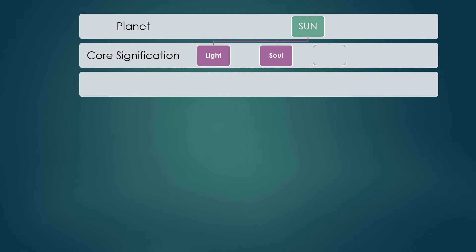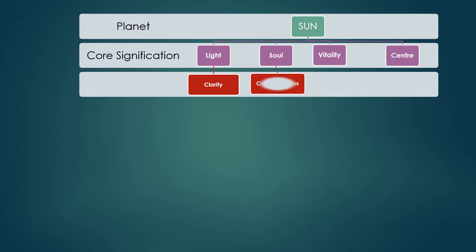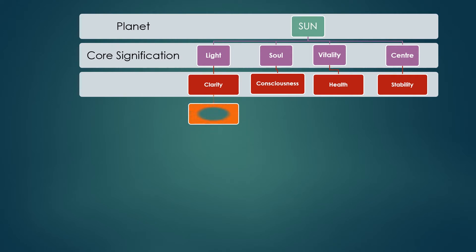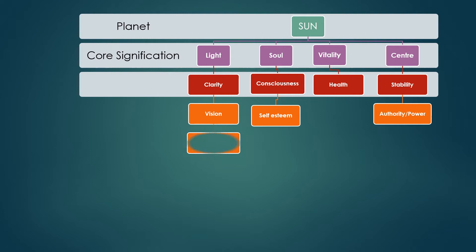The second signification is consciousness. When you throw light on a dark object, you can see things clearly. So light gives us clarity, and clarity gives us understanding of what we need in our life — what we want and what we don't want. Once we have that clarity, we can have a broader vision. So Sun is also associated with our vision.